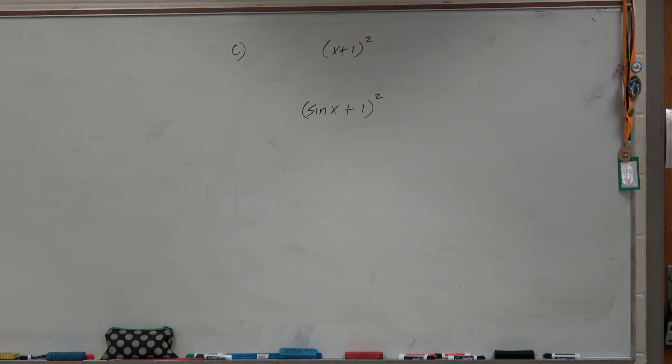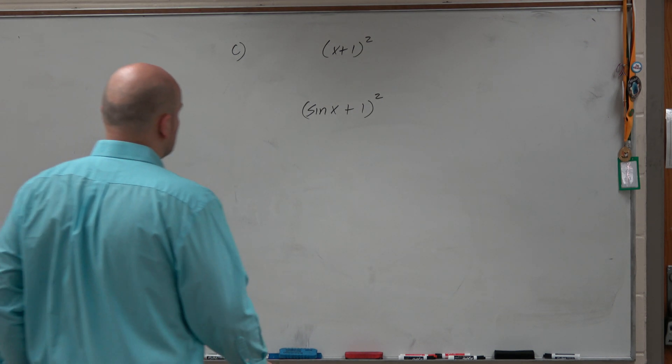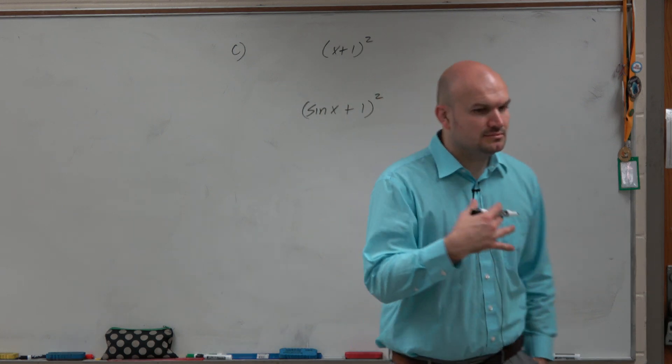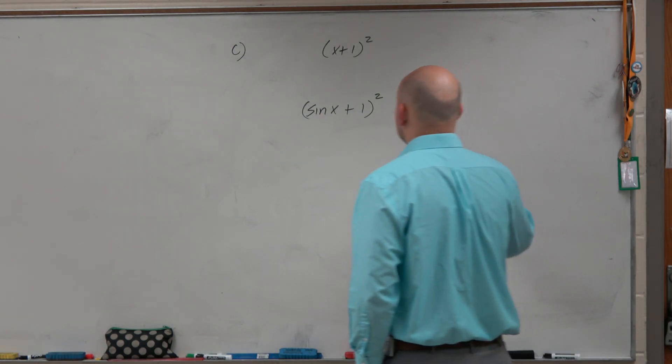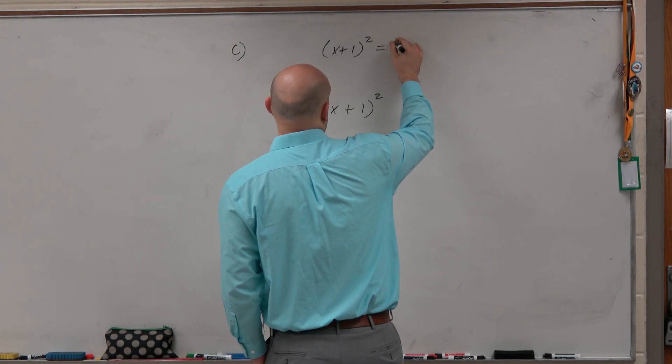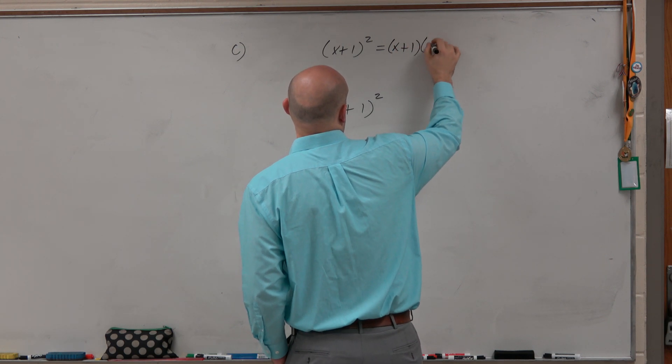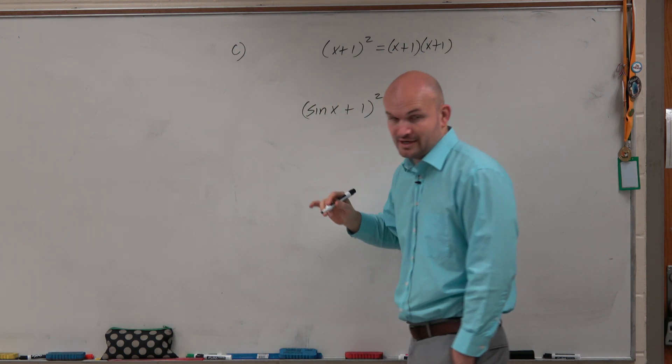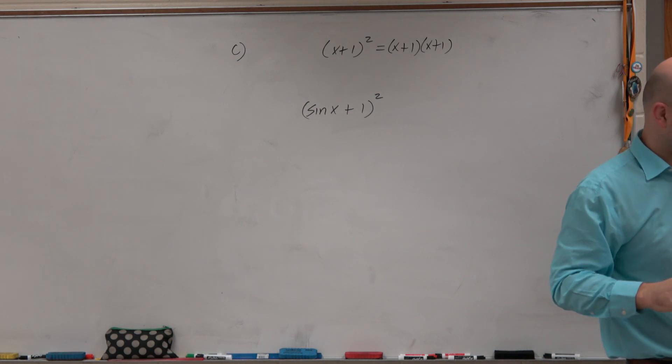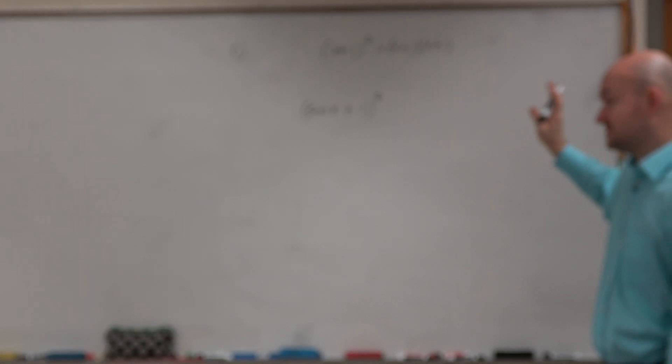So let's kind of cover this because, again, one of the big things that we need to remember when we have a binomial squared is it's (x + 1) times (x + 1), right? Do not write x squared plus 1 squared. It's (x + 1) times (x + 1).